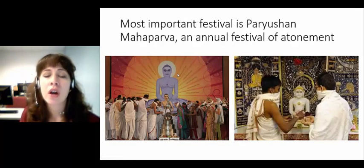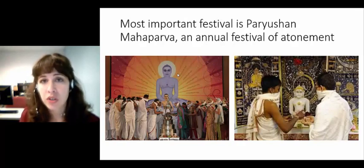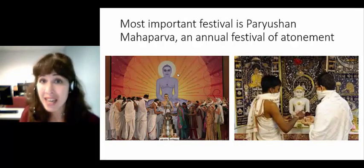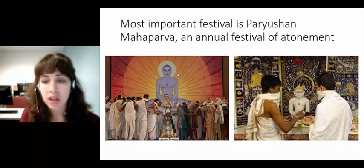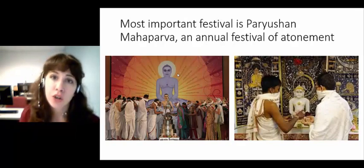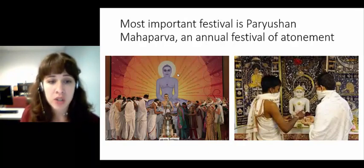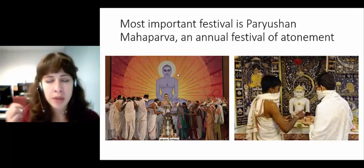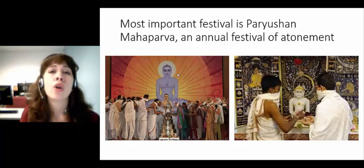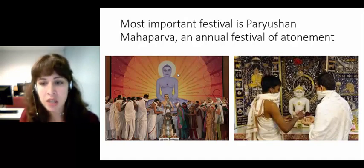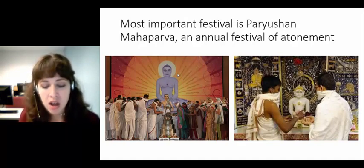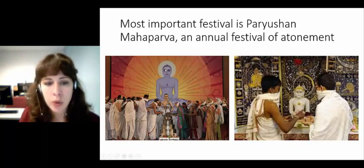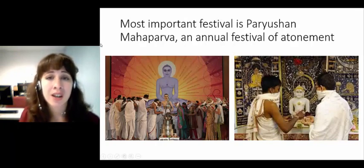Their most important festival is called Paryushana Mahaparva — an annual festival of atonement. The Jewish religion has a day of atonement as well. It is recognized with an eight-day fast: very simple eating and little water for eight days. During that time Jains are supposed to seek forgiveness for things they've committed that year. They do a lot of meditations, like the Jain purification ritual, where they mentally reach out to all beings and to anything they might have harmed. They will go to people they know — anyone they might have wronged that year — and beg for their forgiveness. They spend a lot of time meditating, praying, studying, and they do give offerings to Mahavira as a sign of their atonement.